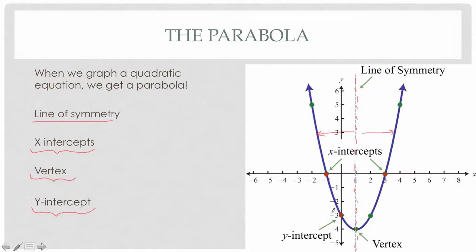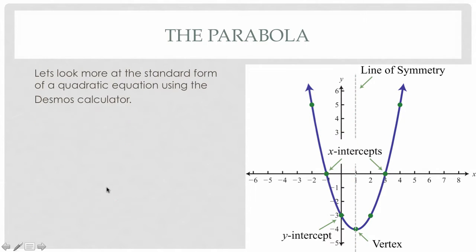A lot of what we do is find x-intercepts, find the vertex, think about symmetry, and look for y-intercepts. Being able to find all these points on a graph and then use algebra to find them is a lot of what we're going to do over this week and next week. Let's play around a little bit more with standard form using our Desmos calculator and understand how changing the parameters of our function affects the way the graph looks.